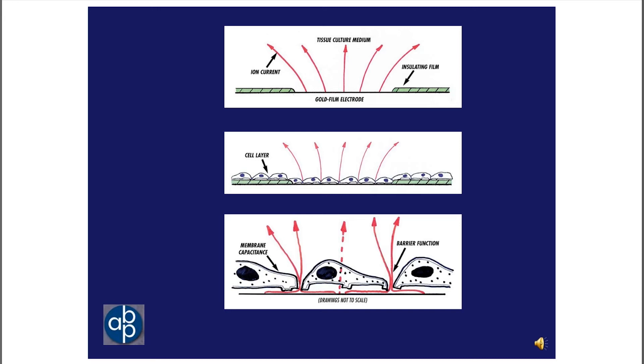The dotted line indicates that some current will capacitively couple through the insulating films, the membranes of the cells, because this is, after all, an AC measurement. The degree to which current couples through the cell membranes is dependent upon the AC frequency. And as we'll see in future presentations, by studying the behavior of cells at different AC frequencies, we can discern different activities of the cells.